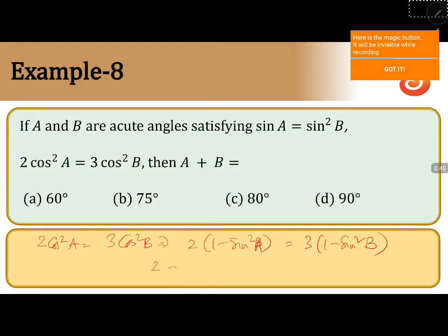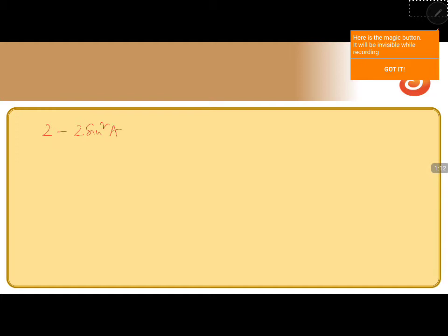It is 2 minus 2 sin square a is equal to 3 minus 3 sin square b. But sin square b is sin a, so it is 3 minus 3 sin a. Therefore, 2 minus 2 sin square a is equal to 3 minus 3 sin a.